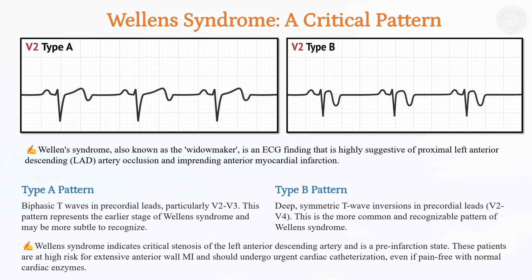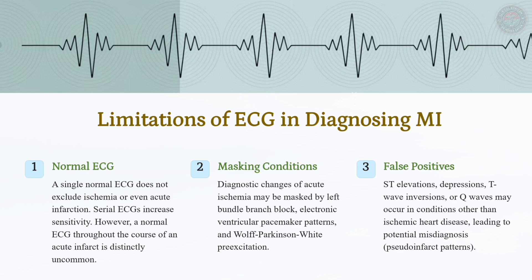A normal ECG does not exclude MI, as ischemic changes may appear only with serial recordings. LBBB, pacemaker rhythms, and WPW can mask infarction, while conditions like pericarditis and LVH can mimic STEMI. ECG findings should always be correlated with clinical presentation, biomarkers, and imaging.